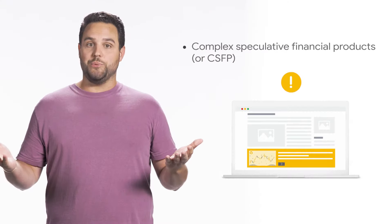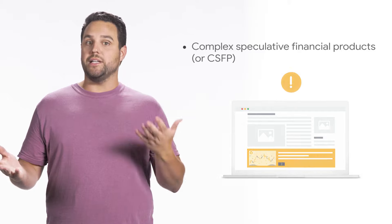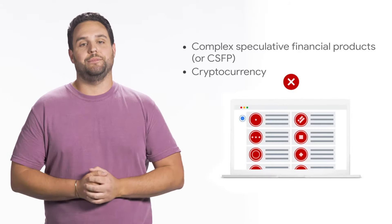Examples of products and services that may require certification in some countries include complex speculative financial products, or CSFP, and cryptocurrency. For more information around financial services certification, check the link in the description box. Remember, these are just some examples of the financial services policy, so be sure to review the entire policy article linked below to be fully compliant.